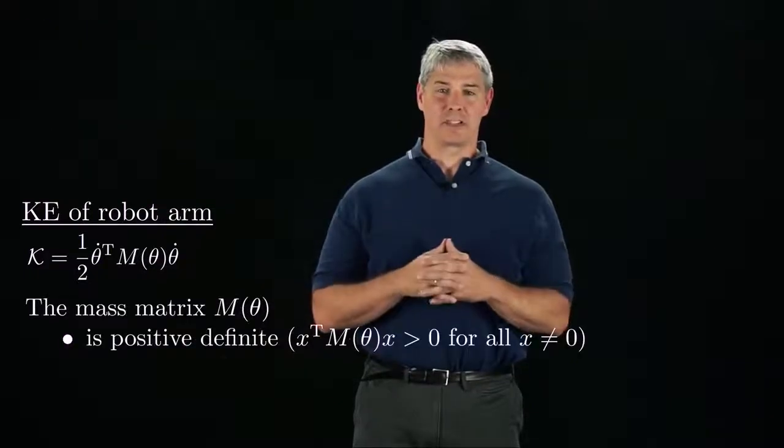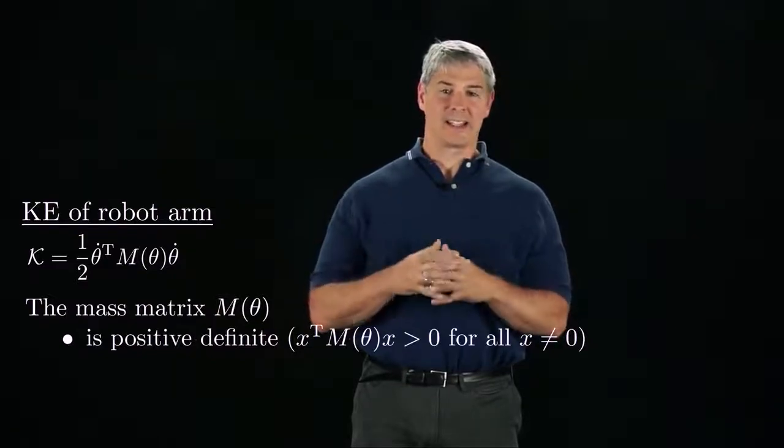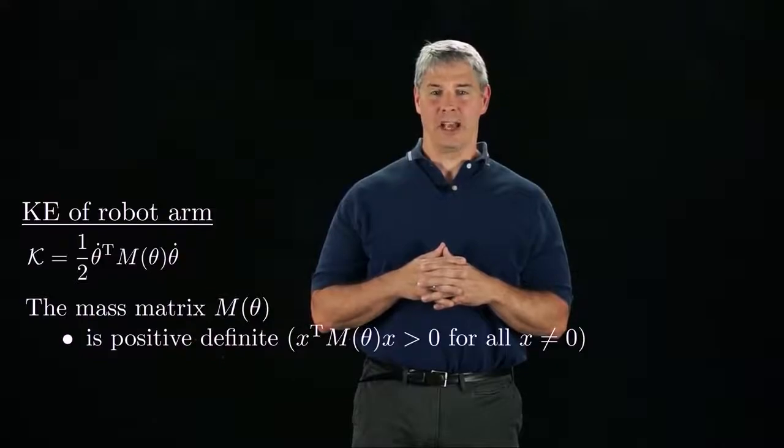The mass matrix is positive definite, meaning that the kinetic energy is positive for any non-zero joint velocity vector. This is analogous to the fact that a point mass can only have positive mass.